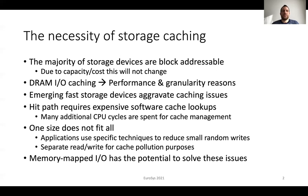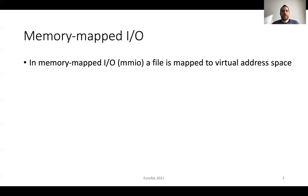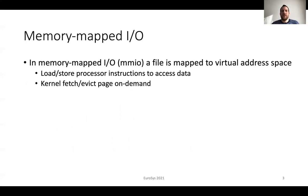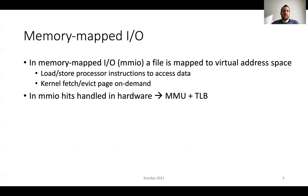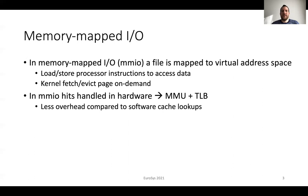Memory Mapped IO has the potential to solve these issues. In Memory Mapped IO, a file or device is mapped to a process virtual address space. Applications can use load or store instructions in order to access data. In this case, the kernel is responsible to fetch and evict pages on demand. Hits are handled entirely in hardware through the memory management unit and the TLB. In the case of a TLB miss, an additional page table walk is also required. As hits are handled entirely in hardware, this provides less overhead compared to software cache lookups.